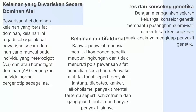Selanjutnya yaitu kelainan multifaktorial. Banyak penyakit manusia memiliki komponen genetik maupun lingkungan dan tidak menuruti pola pewarisan Mendelian sederhana. Penyakit multifaktorial seperti penyakit jantung, diabetes, kanker, alkoholisme, skizofrenia, gangguan bipolar, dan banyak penyakit lainnya. Dalam kasus ini, komponen herediter adalah poligenik. Gaya hidup kita memiliki efek luar biasa pada fenotip untuk kesehatan kardiovaskular dan karakter multifaktorial lainnya.